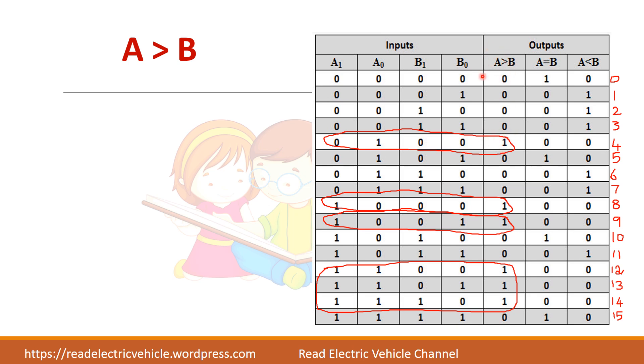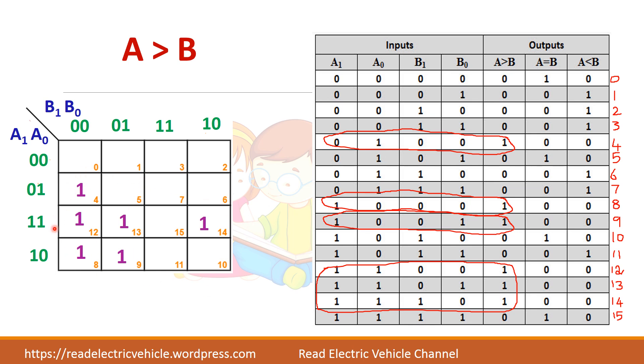Now mark the min terms which have 1. So for A greater than B condition, where are the places you are getting 1? Min term 4, 8, 9, 12, 13, 14. So mark those things in the K map. You remember to mark the variables here clearly. Your input bits should be in the K map. So the input has A1, A0 and B1 and B0.